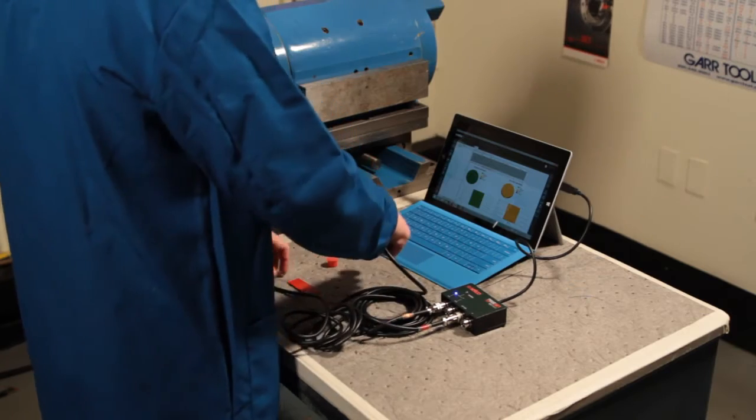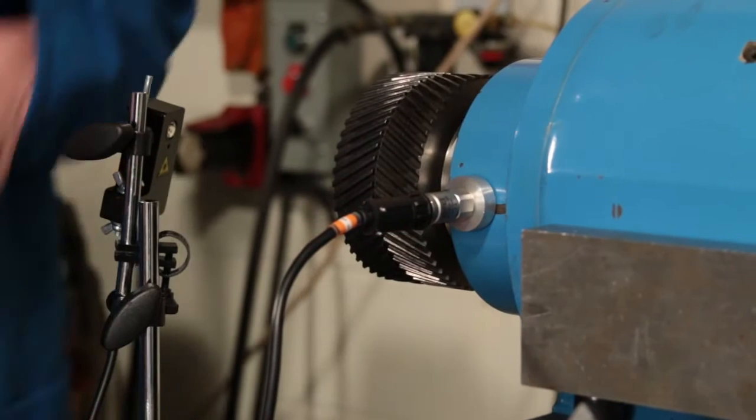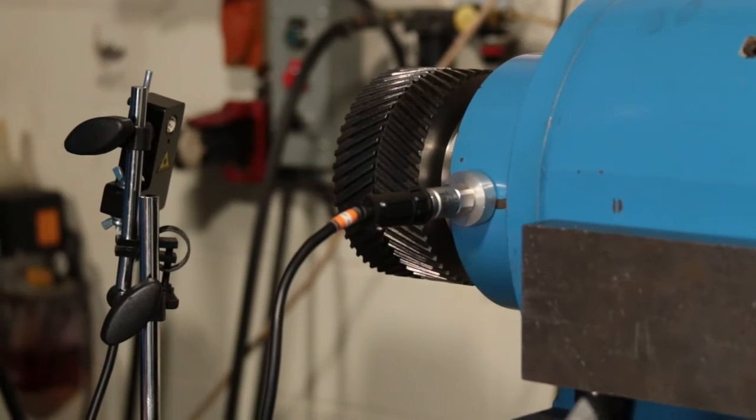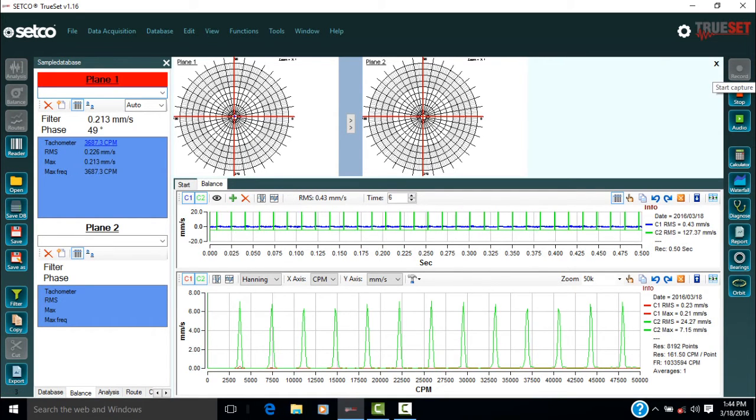Place the accelerometer in the horizontal position. The accelerometer should be as close to the weight plane as possible. With your equipment running, click record to take the initial data. It is a good idea to record two sets of data to ensure the results are similar.